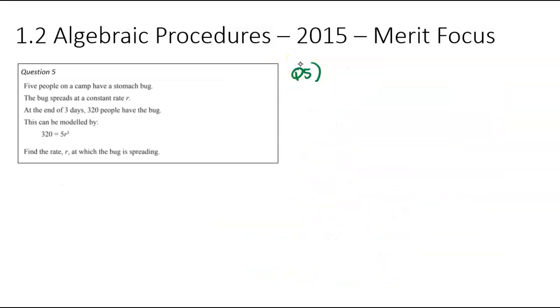On to question number five, our last question for this exam. I've got an equation down the bottom, and it says to find out r. Don't really need to read the context, but let's have a read through anyway. So five people on a camp catch a stomach bug. The bug is spreading at a constant rate, which is r. That's what we're trying to find out. At the end of three days, 320 people have the stomach bug. This can be modeled by this scenario here. Find r. Yeah, so this time around, we've got 360 equals 5r³. I'm just trying to find r.